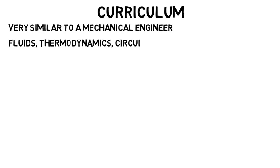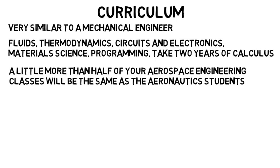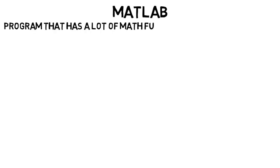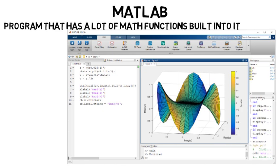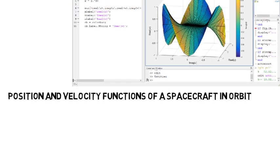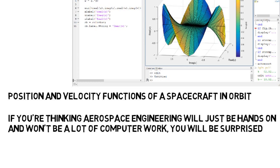Your curriculum will be very similar to a mechanical engineer. You will learn a little about everything, including fluids, thermodynamics, circuits and electronics, material science, and programming, as well as take about two years of calculus. Also, a little more than half of your aerospace engineering classes will be the same as the aeronautics students — you both take a lot of the same major classes, but then diverge into the astronautics classes where you learn about many of the subsystems discussed earlier. You will see plenty of math and labs, but also be ready for a lot of MATLAB — a program with many math functions built in that allows graphing in two and three dimensions and lets you mathematically model systems by coding. So if you're thinking aerospace engineering will just be hands-on and won't involve a lot of computer work, you will be surprised when you enter undergrad.